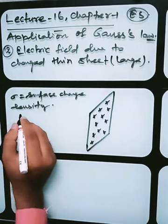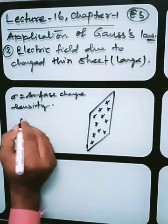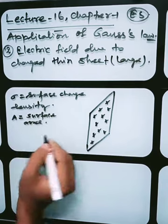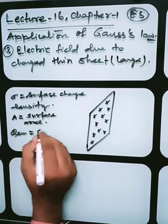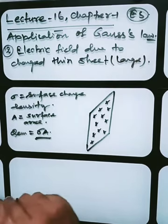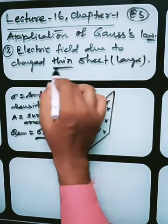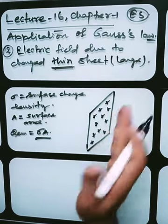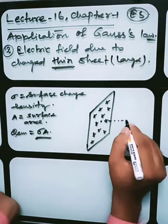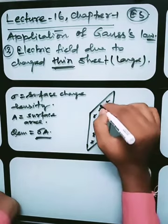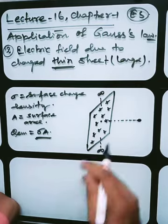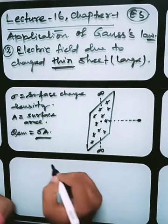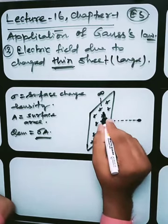If we use elementary surface area A, then q_enclosed equals sigma times A. This thin sheet means the positive charge will have an effect on both sides. We have to find the electric field at a point on either side. Since it extends to infinity, for simplicity we take a cylindrical Gaussian surface. The cylindrical Gaussian surface is chosen because we need to capture the field on both sides of the sheet.